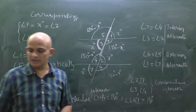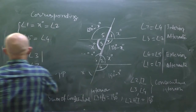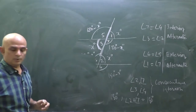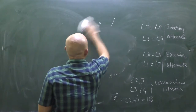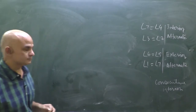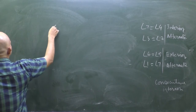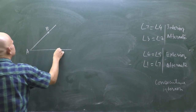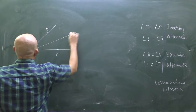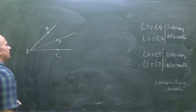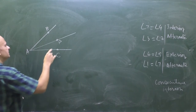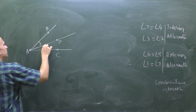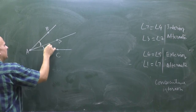So we have covered corresponding angles, vertically opposite angles, alternate interior angles, alternate exterior angles, and consecutive interior angles whose sum is 180 degrees. Now let's discuss angle bisector, which we could not cover in the last video.